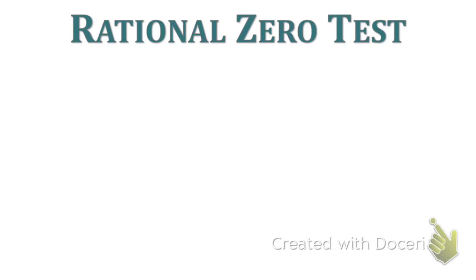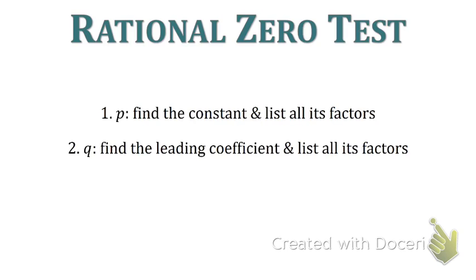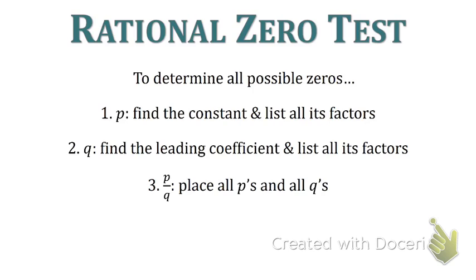Now let's talk about finding rational zeros. There's a rational zero test. You're going to find your constant of the polynomial and list all its factors — we call those your p's. Then we find our q's by finding the leading coefficient and listing all of its factors. Then we find p over q, taking all of our p's and placing them over all of our q's. These will be all of our possible zeros, and we can use the remainder theorem and factor theorem to determine which of the possible zeros are actually zeros of the polynomial.